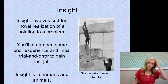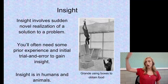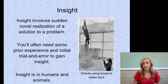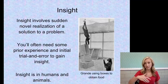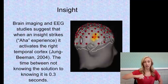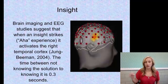Insight involves the sudden, novel realization of a solution to a problem — your 'aha' experience. You'll often need some prior experience and initial trial and error to gain insight. Insight occurs in humans and animals, as we saw with insight learning back in Unit 6. Brain imaging and EEG studies suggest that when an insight strikes, it activates the right temporal cortex. The time between not knowing the solution and knowing it is like a split second.